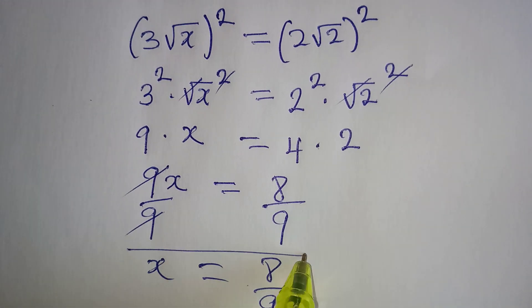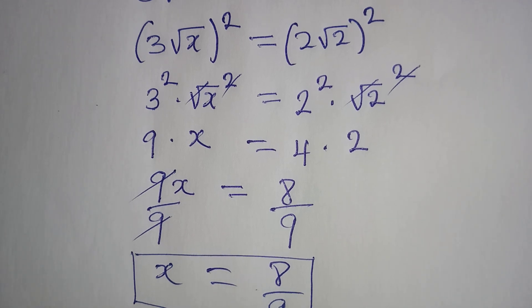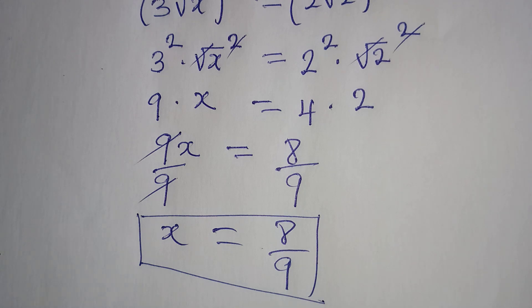so that 9 will cancel itself and x will be equal to 8 over 9. So this is the value of x.